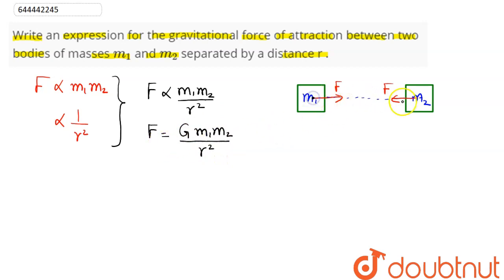The value of G is given out as 6.67 × 10⁻¹¹ newton meter squared per kilogram squared. This is known as Newton's law of gravitation, and this G is known as universal gravitation constant.